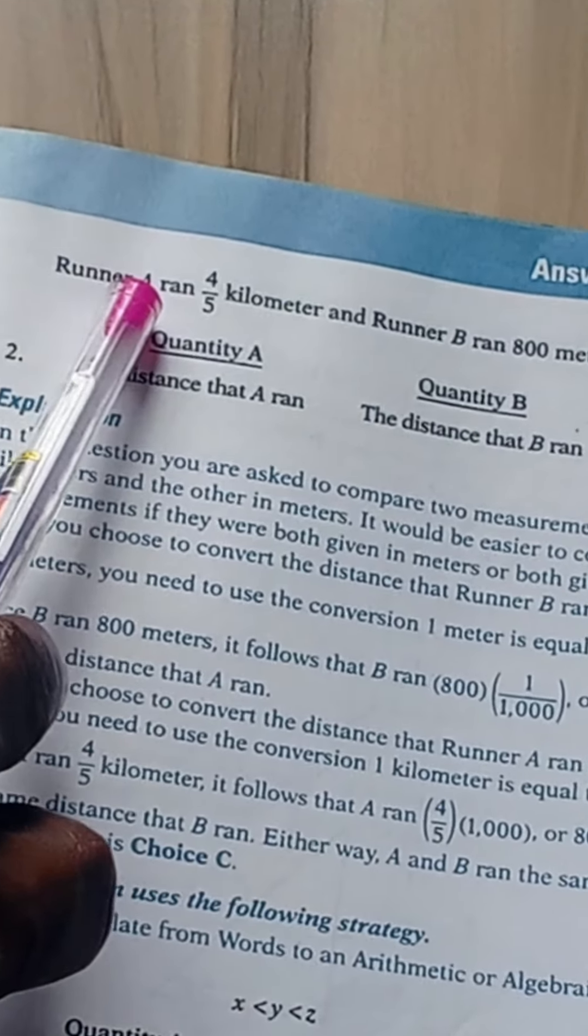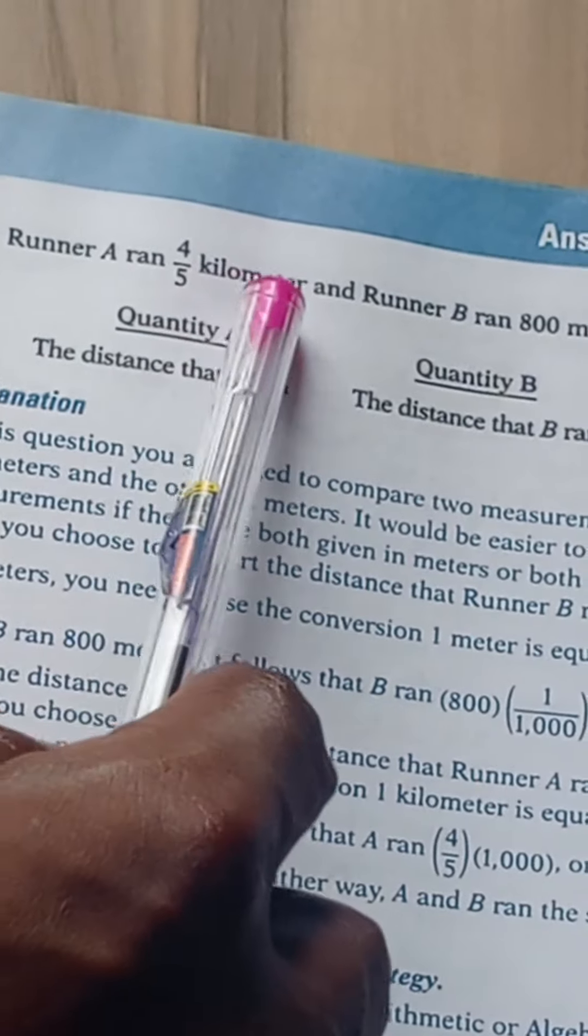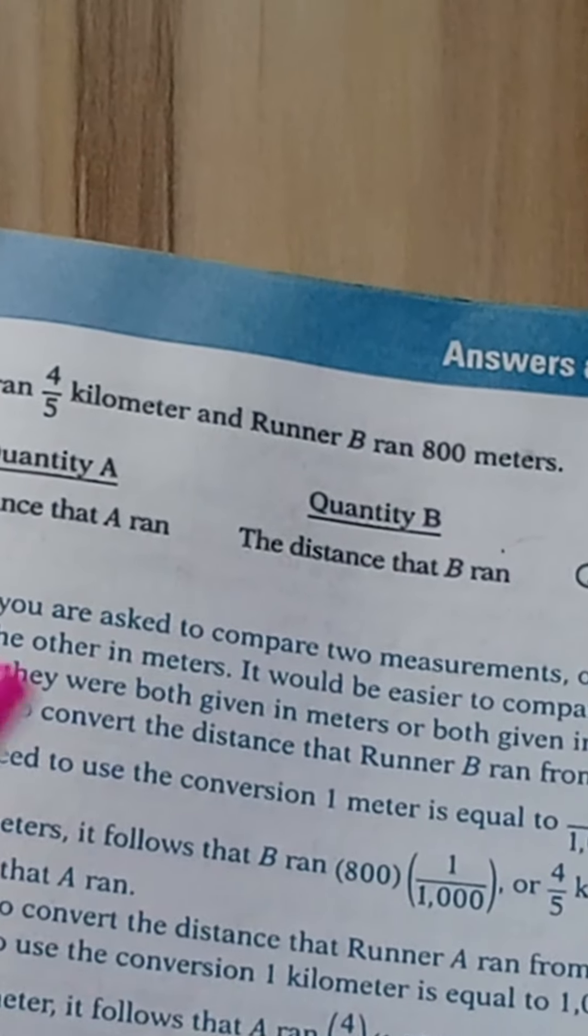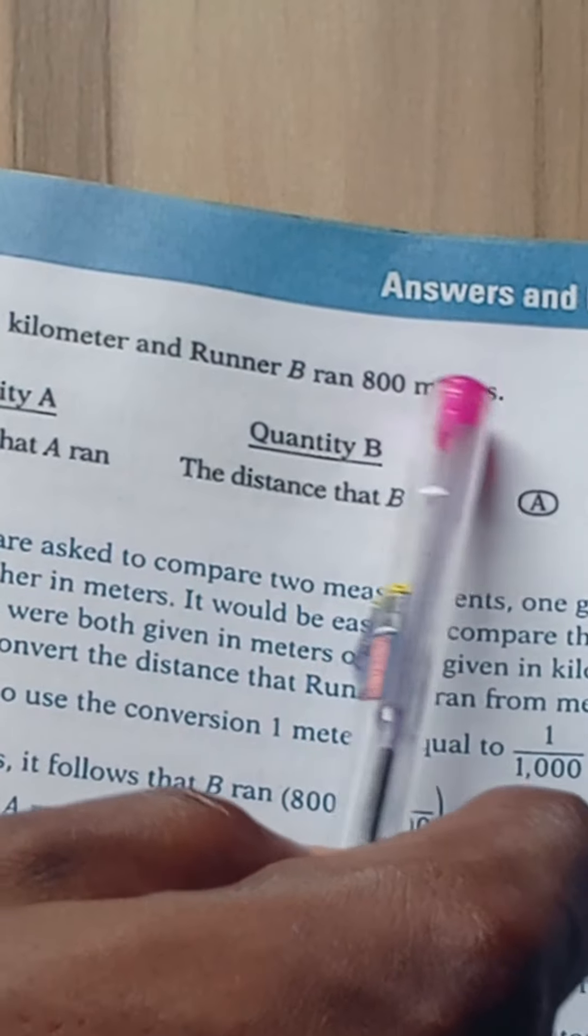Runner A, his distance covered was given in kilometers while for runner B, the distance covered was given in meters.